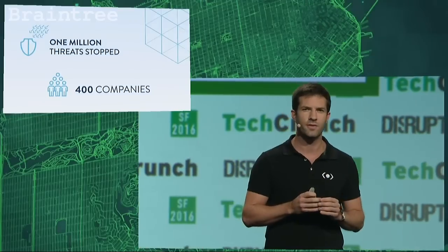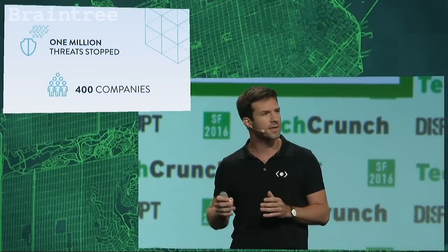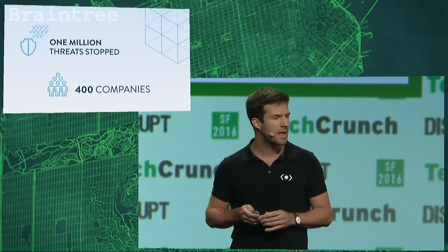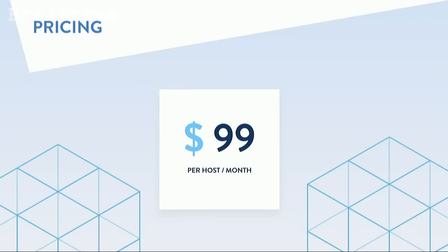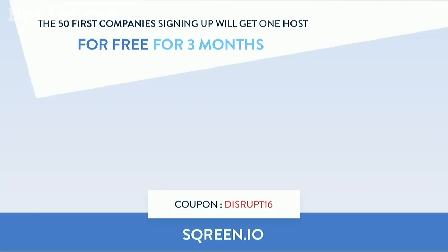So where are we now as a company? We've already blocked one million attacks so far, and we launched five months ago. More than 400 developers and companies have been using Screen. Our pricing starts at only $99 per month and scales as you grow with the number of hosts. Today, we are excited to announce that Screen is now available for Python, Rails, and Node.js applications. We are Screen, and we make application security simple.